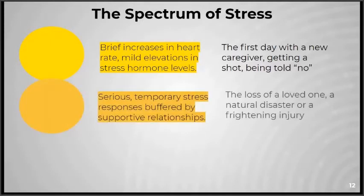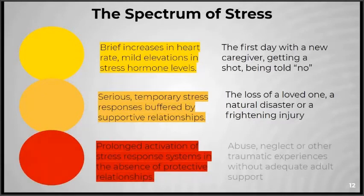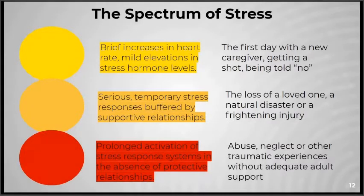The next level is more serious — temporary stress responses buffered by supportive relationships. This might include the loss of a loved one, a natural disaster, or a frightening injury. The third type is prolonged activation of stress response systems in the absence of protective relationships. This might be abuse, neglect, or other traumatic experiences without adequate adult support.